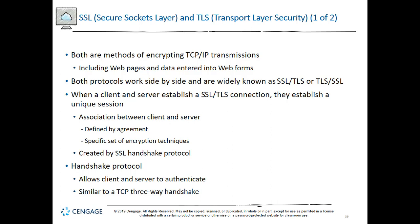The IETF has standardized the similar TLS protocol. TLS operates at the transport layer and uses slightly different encryption algorithms than SSL, but is essentially the updated version of SSL. SSL has now been deprecated and should be disabled whenever possible, leaving the more secure TLS to provide protection. HTTP uses TCP port 80, whereas HTTPS uses SSL or TLS encryption and TCP port 443. Each time a client and server establish an SSL or TLS connection, they establish a unique session defined by an agreement on a specific set of encryption techniques.